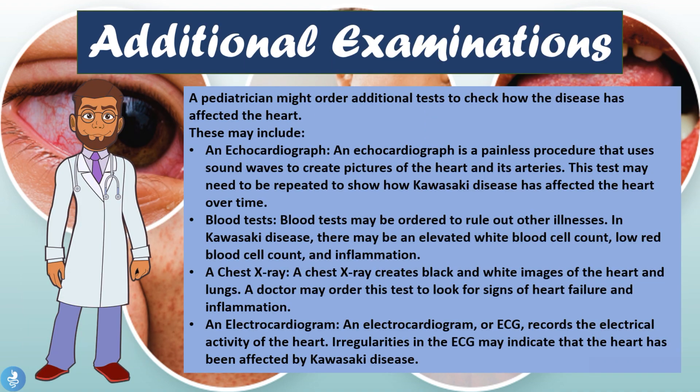The pediatrician might order additional tests to check how the disease has affected the heart, as this is one of the most common causes of heart disease in children. These tests may include an echocardiograph — a painless procedure that uses sound waves to create pictures of the heart and its arteries — which may need to be repeated over time. Blood tests may also be ordered to rule out other diseases; in Kawasaki disease there may be an elevated white blood cell count, a low red blood cell count, and increased inflammatory markers.